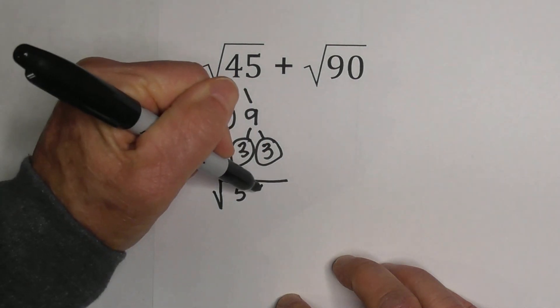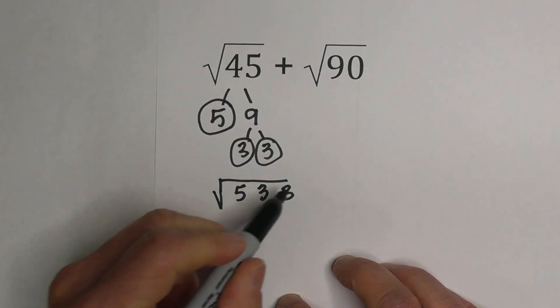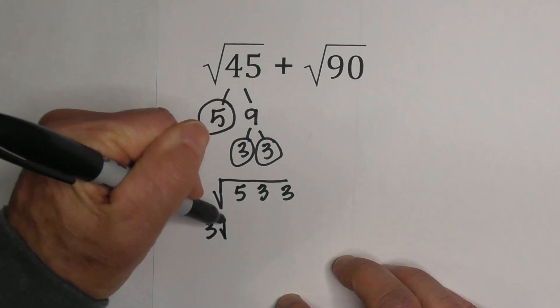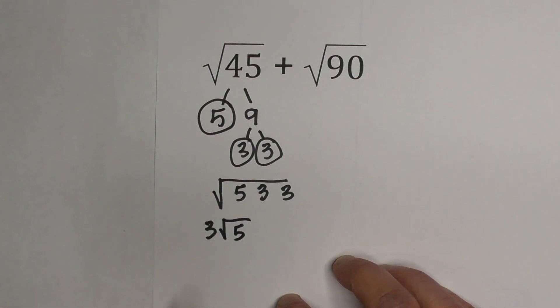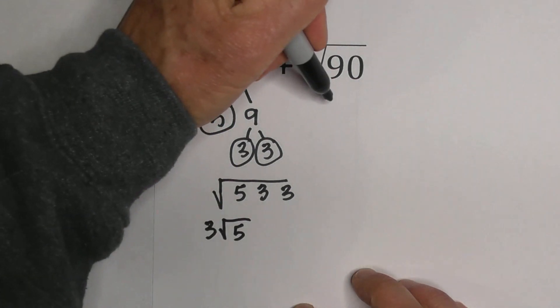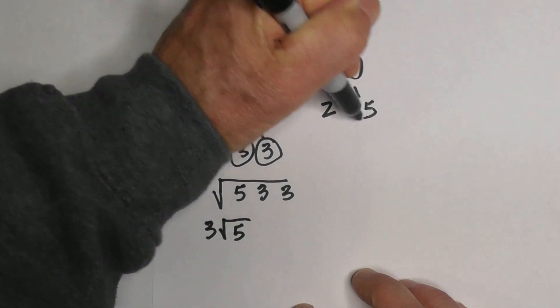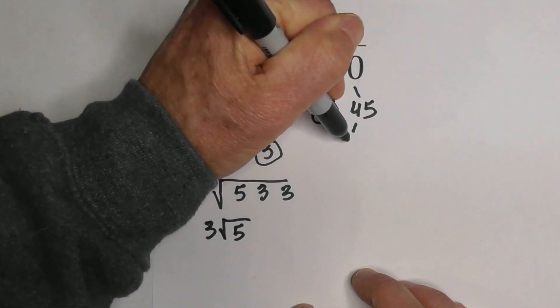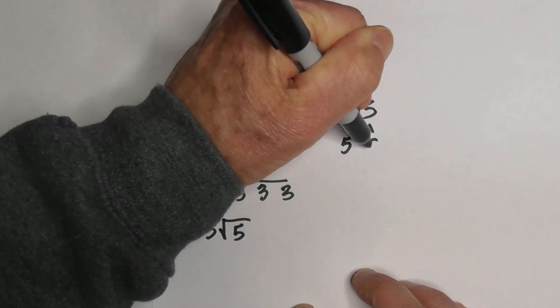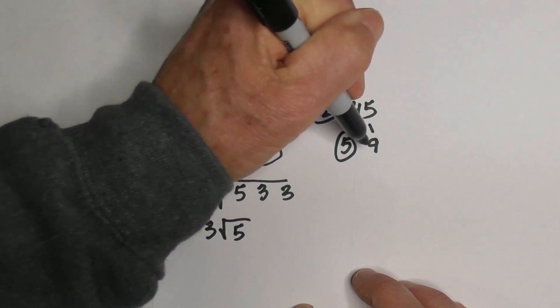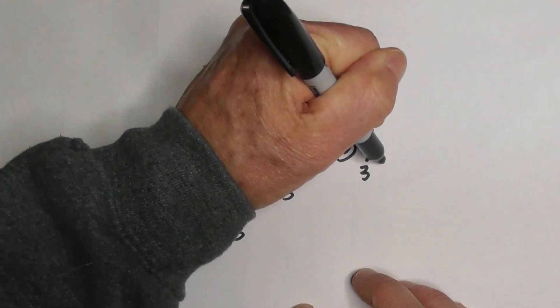We're down to prime numbers. Let's place them under the square root sign. I can pull out one pair of 3s, so I have 3√5. Now I'm going to do the same for 90. Let's go with 2 times 45, and then let's go 5 times 9, circle the 5 because it's prime, and then 3 times 3.